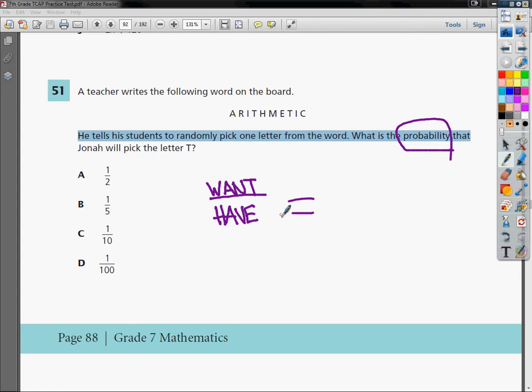Right now we have so many letters. We have 1, 2, 3, 4, 5, 6, 7, 8, 9, 10. So 10 goes on the bottom.